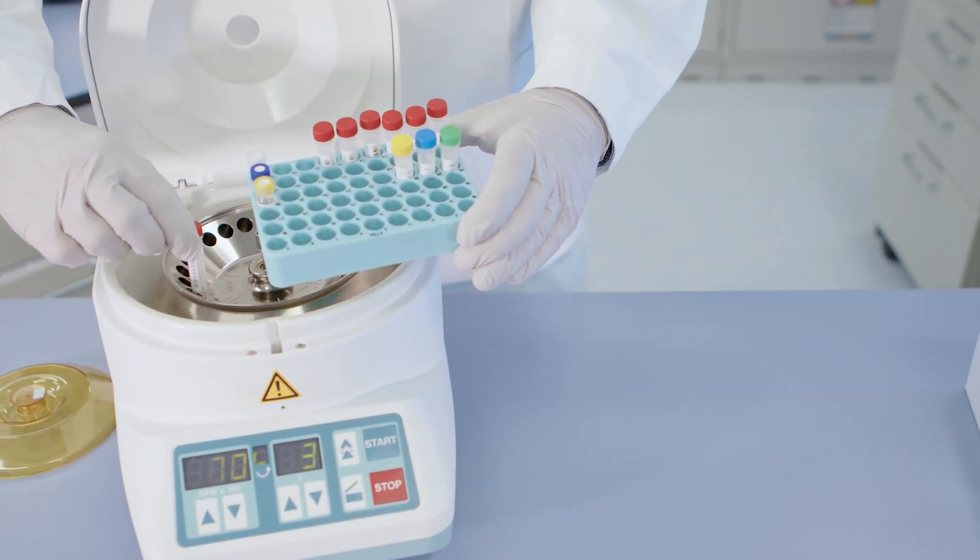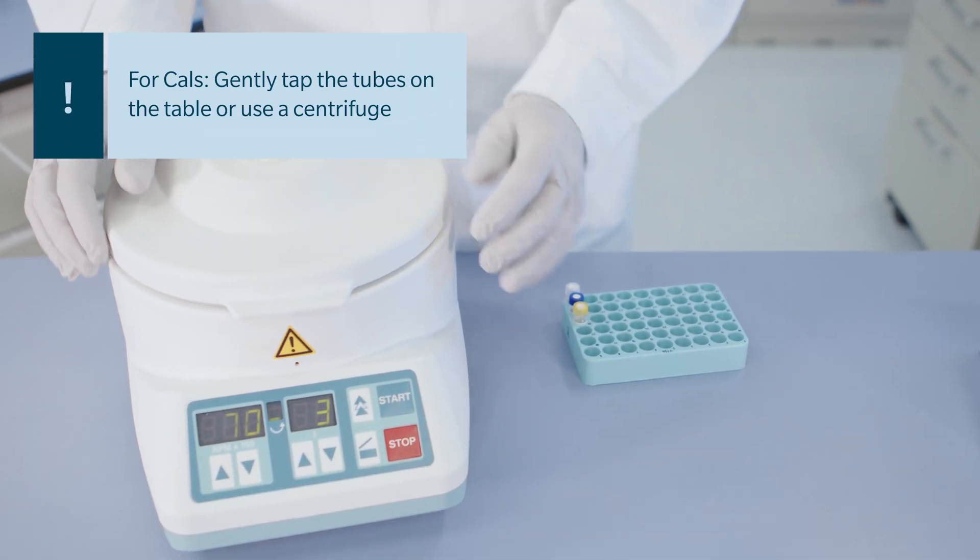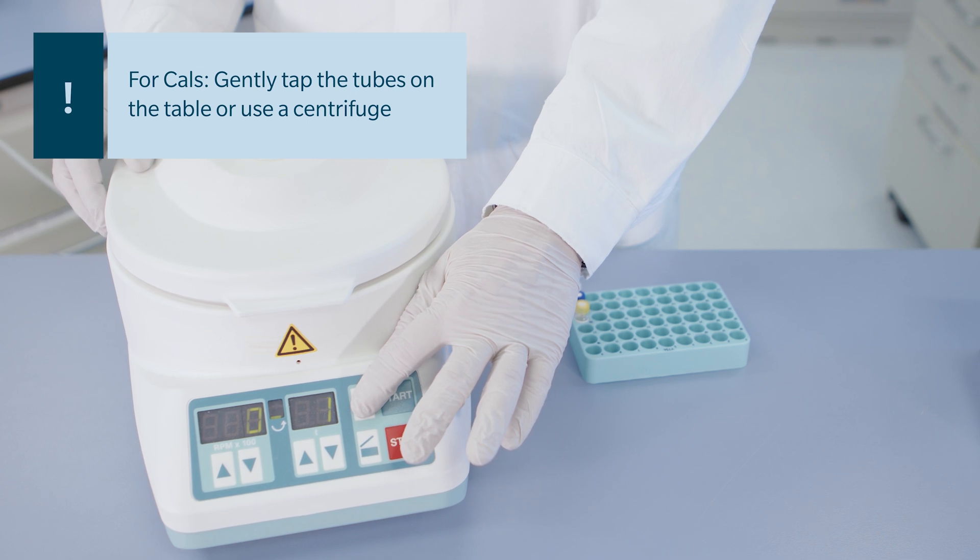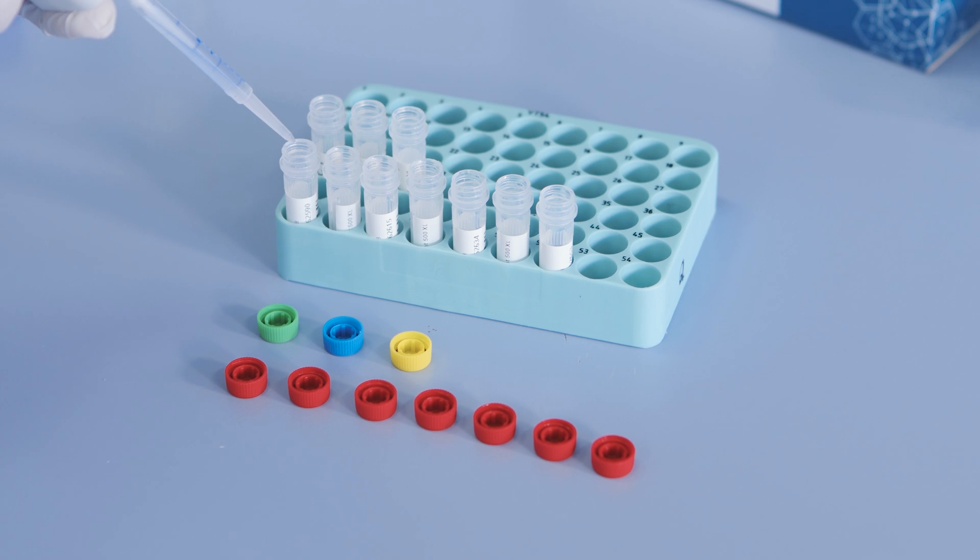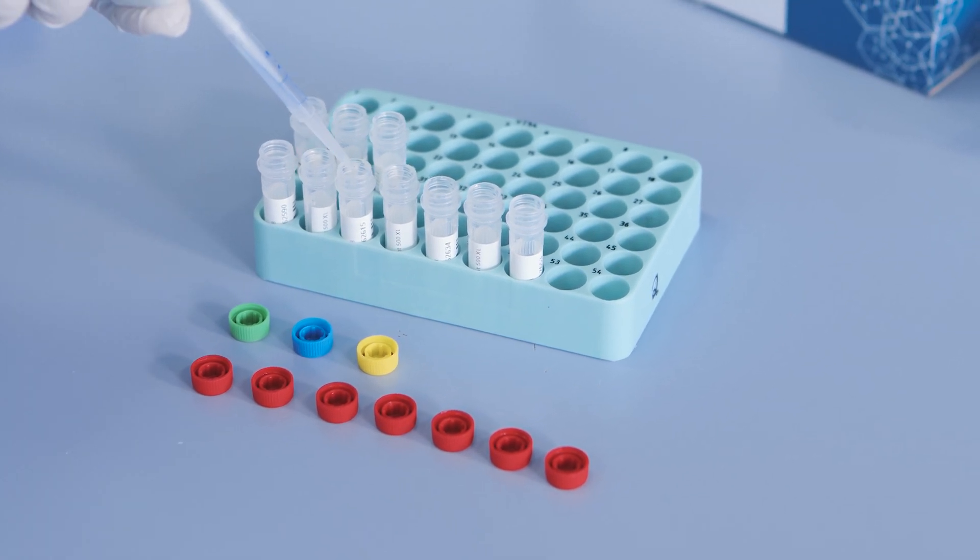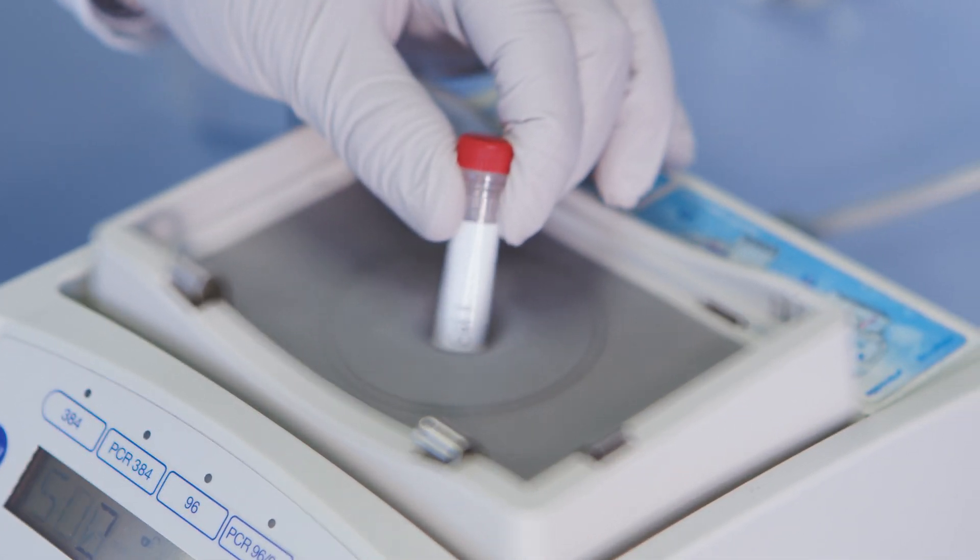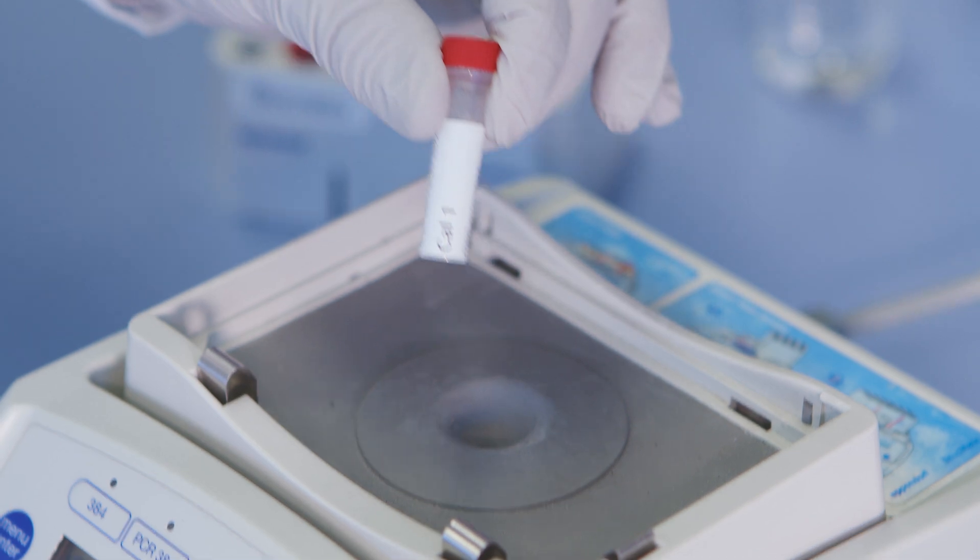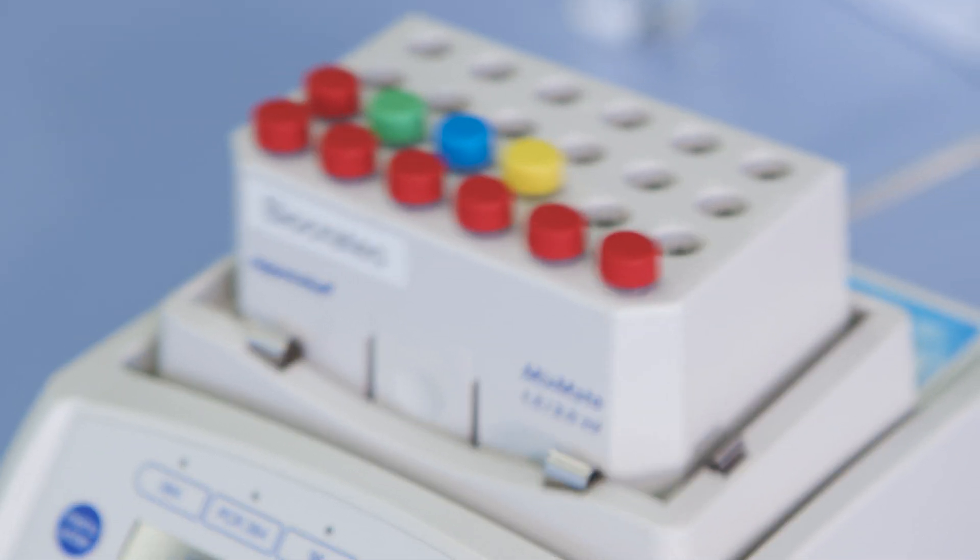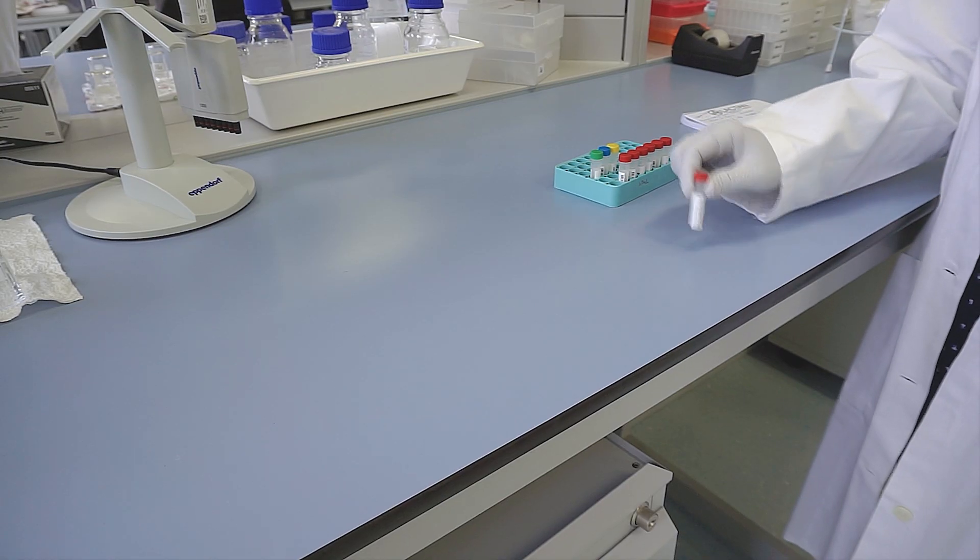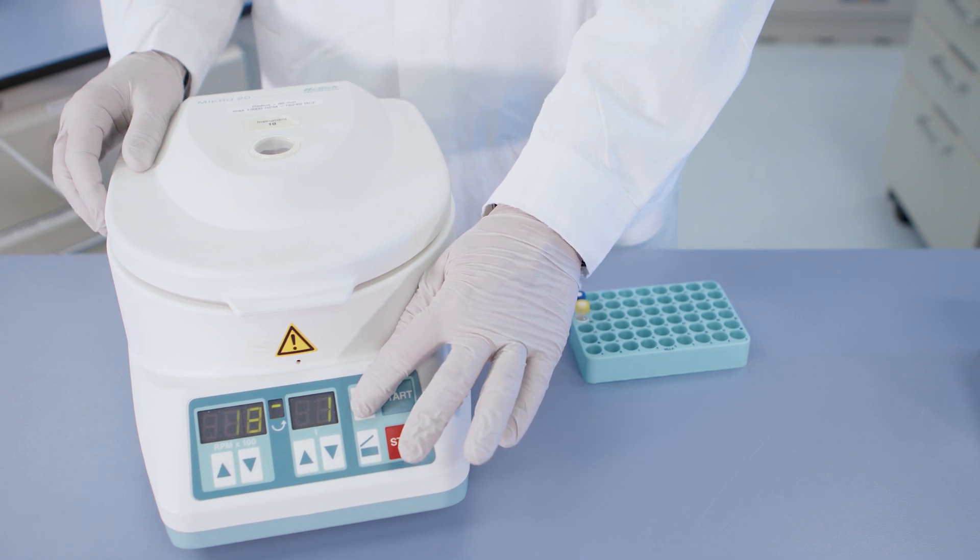Before starting with the kit preparation, centrifuge calibration standard and QC vials prior to opening for two minutes at 10,000 G to ensure that all lyophilized material is at the bottom of the tube. Carefully open and add 100 microliters of water to each of the seven calibration standards and three QC samples. Vortex each for 10 seconds and invert the tube several times. Shake for 15 minutes at 1200 RPM and then vortex once more for 10 seconds. Gently tap the tubes on the table or briefly centrifuge for a few seconds to make sure that all of the solution is at the bottom of the tube.